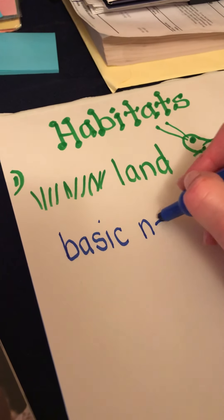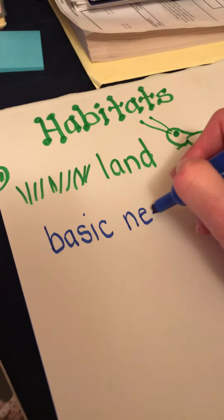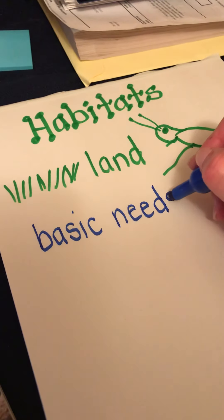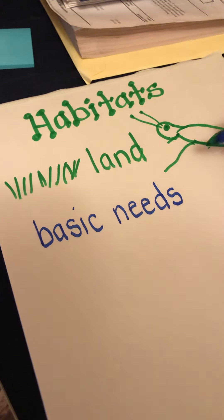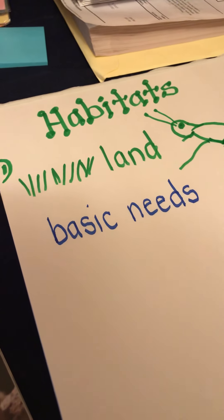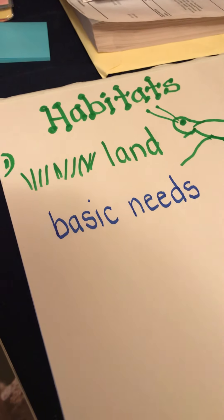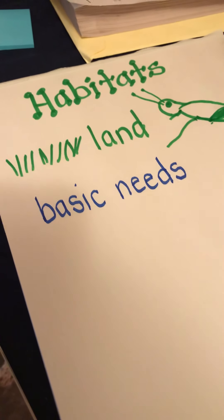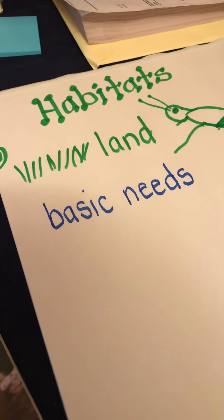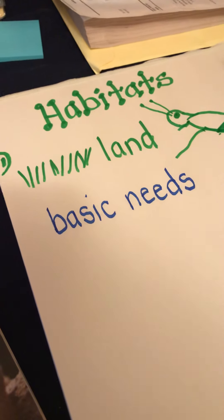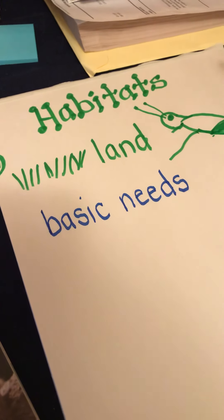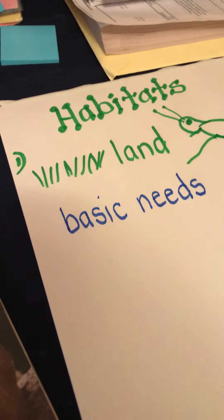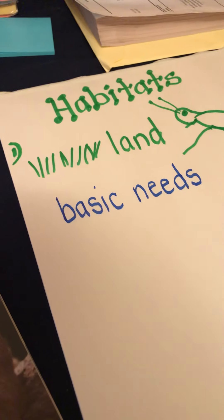Who do you think planned that out? God — that's right. God knew exactly what that grasshopper and all the other animals would need, and he knew exactly where to put them so that their basic needs were met.